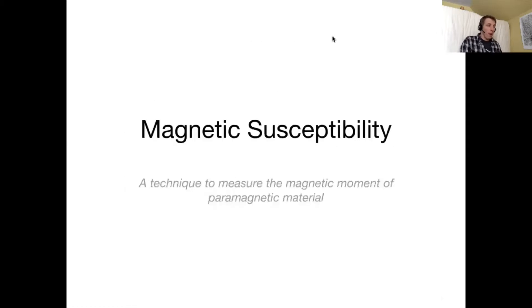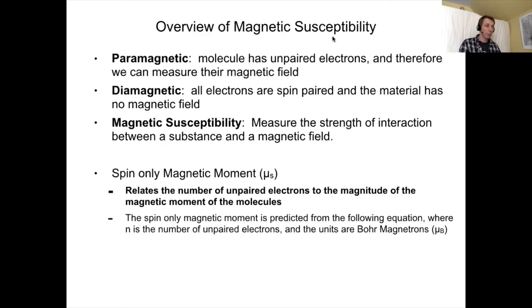A little bit about magnetic susceptibility. This is a technique to measure the magnetic moment of a paramagnetic material. A paramagnetic compound is a molecule that has unpaired electrons and therefore we'll have a magnetic field that we can measure. A diamagnetic compound, by contrast, all the electrons are spin-paired and so there is no magnetic field. The magnetic susceptibility is the measure of the strength of interaction between a substance and the magnetic field.